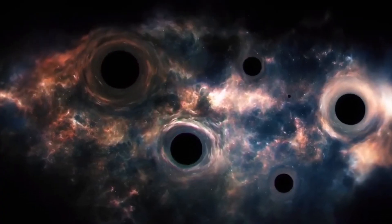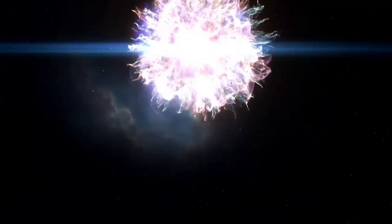Black holes are born at the end of the life cycle of massive stars. Dying, such stars burn with flame over a new one, and then collapse, as if falling inside themselves.